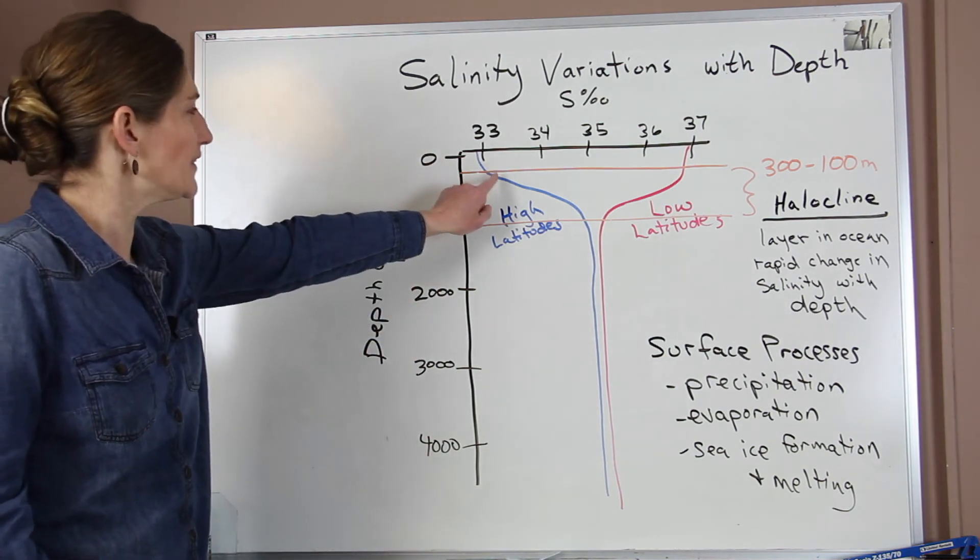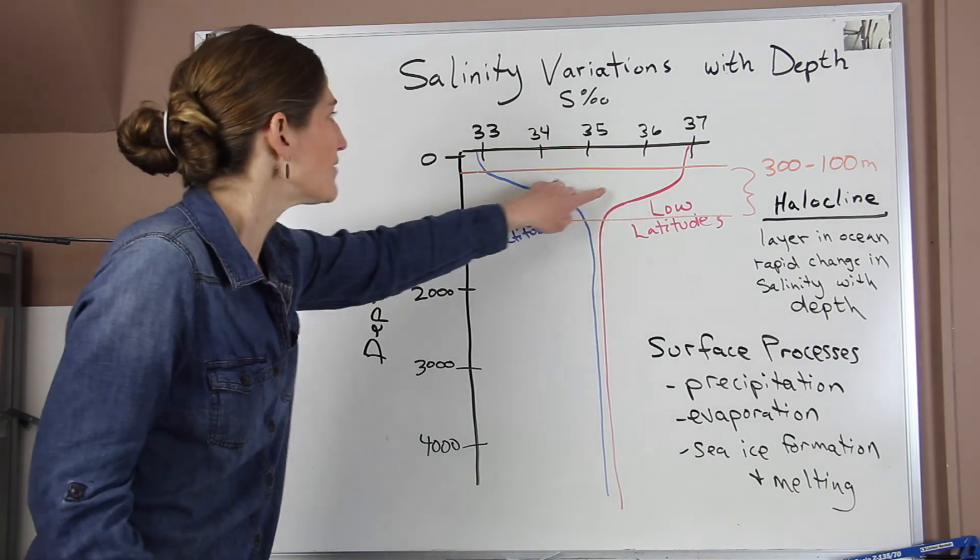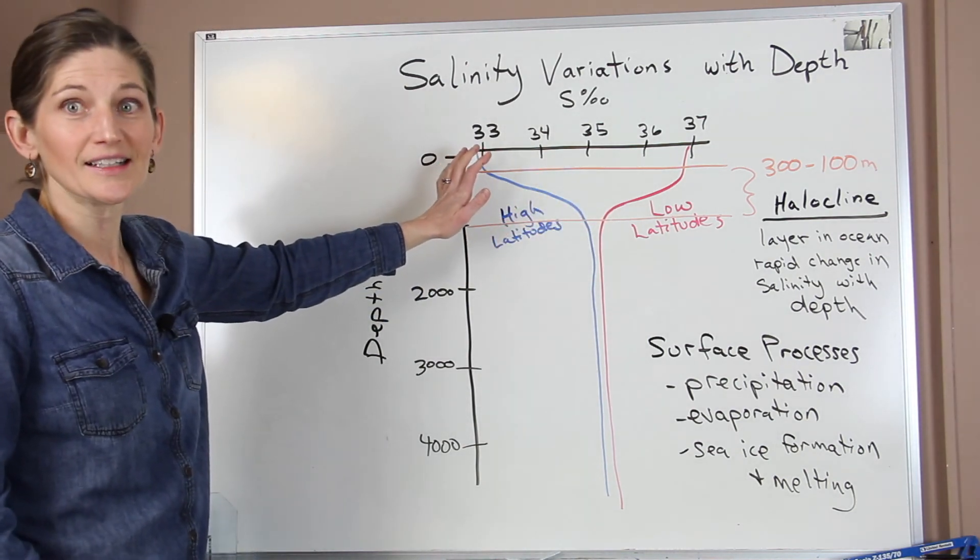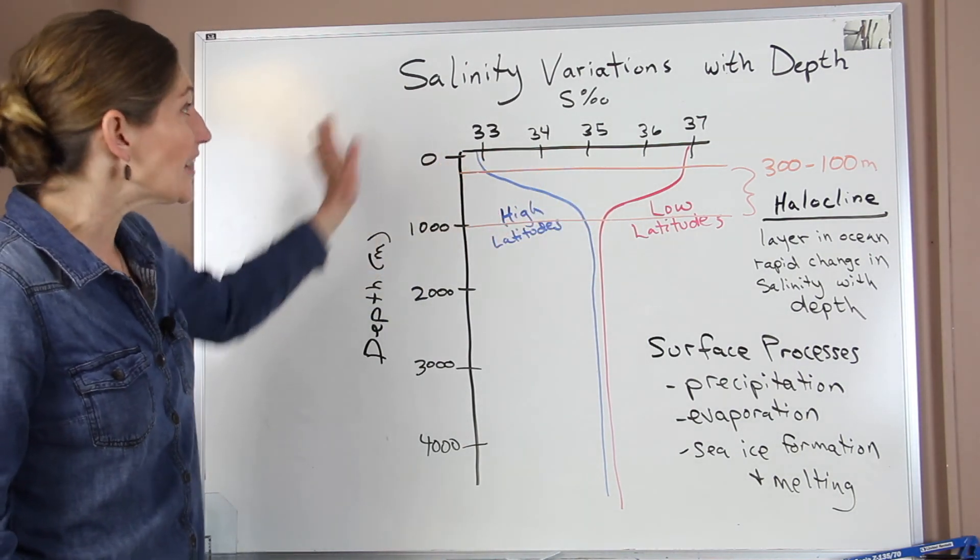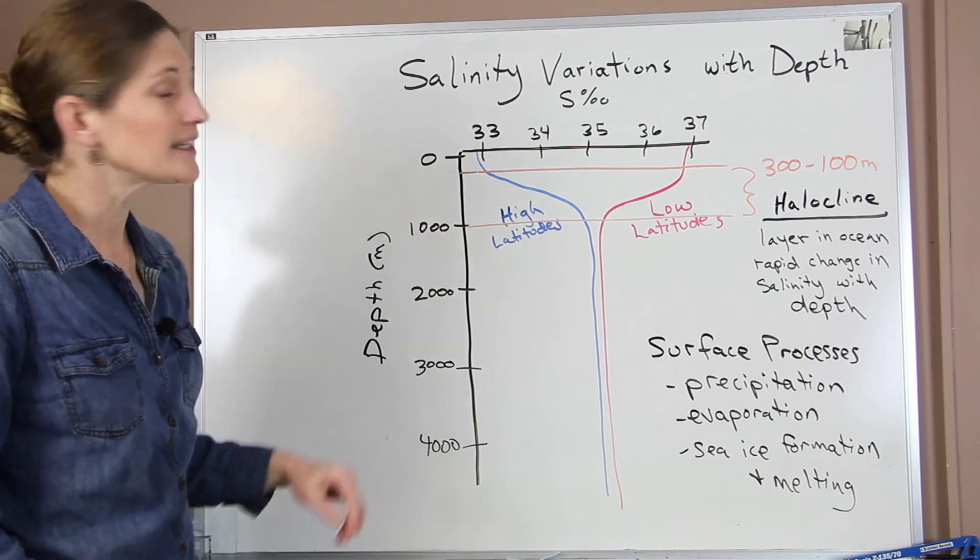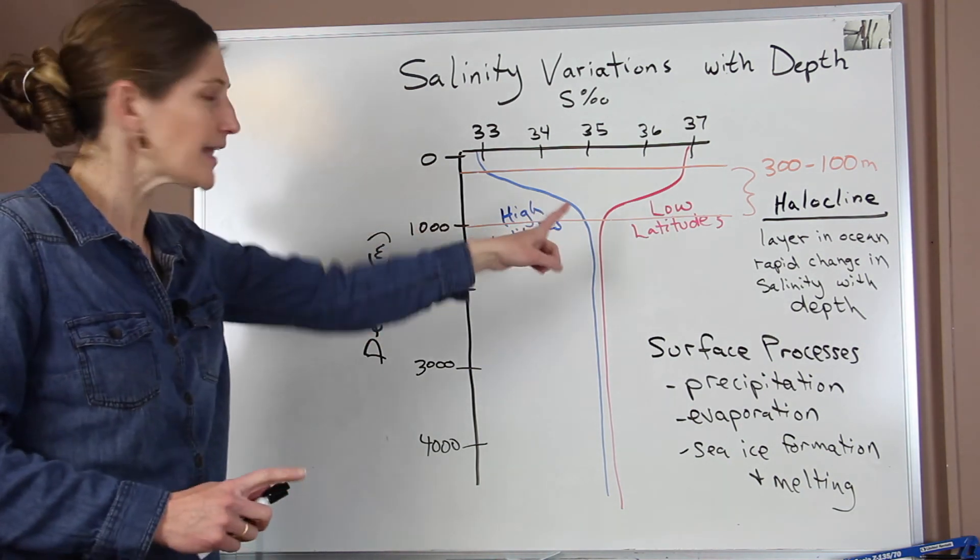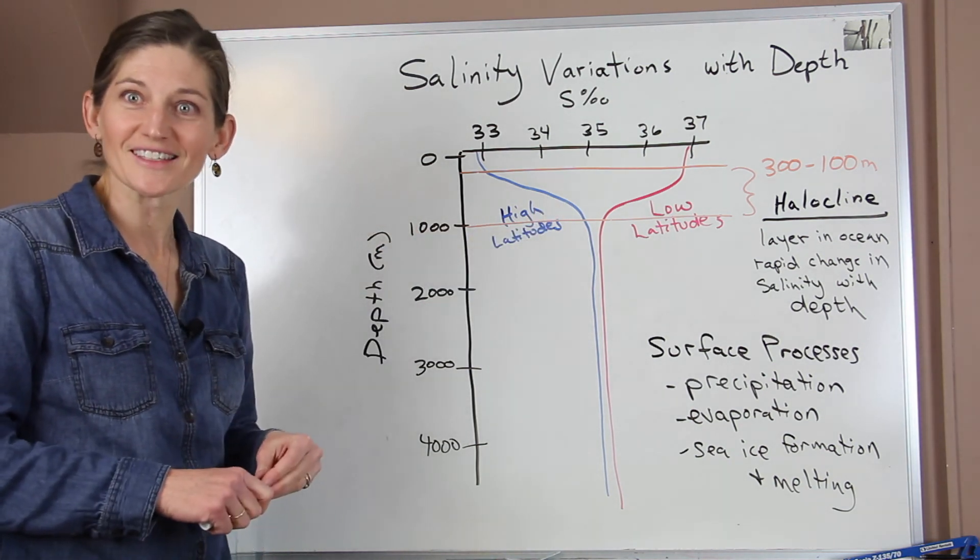All right. And then this layer, these lines where we have this rapid change in salinity, that's our halocline. And overall, this tells us how salinity varies with depth at different latitudes on the earth's surface.